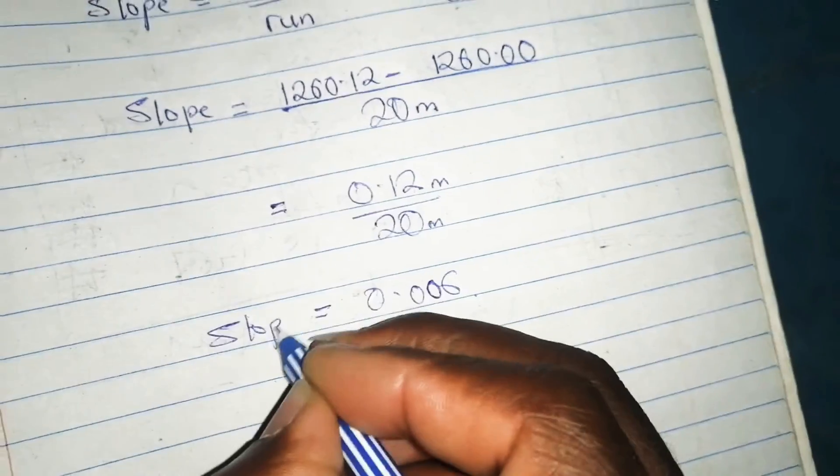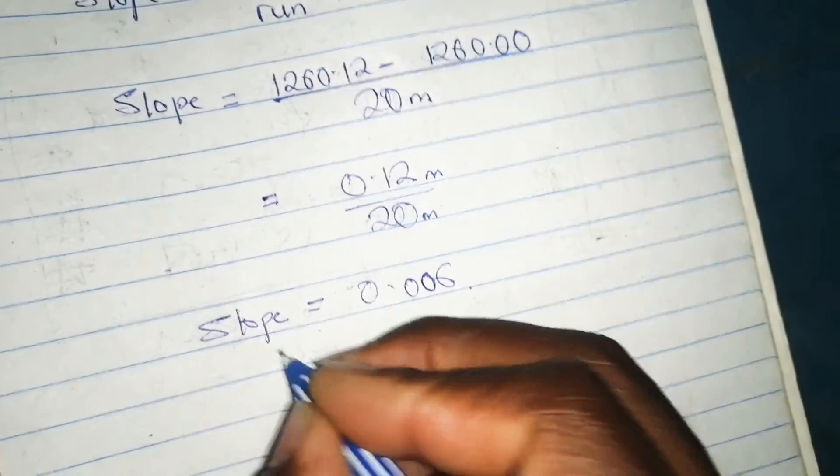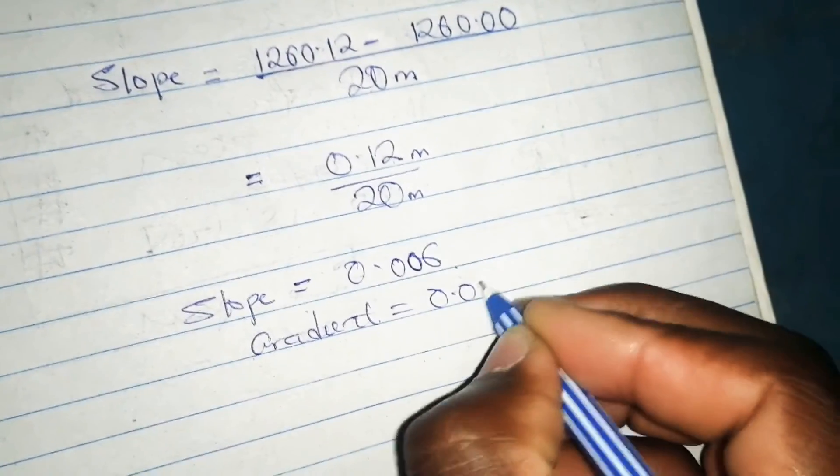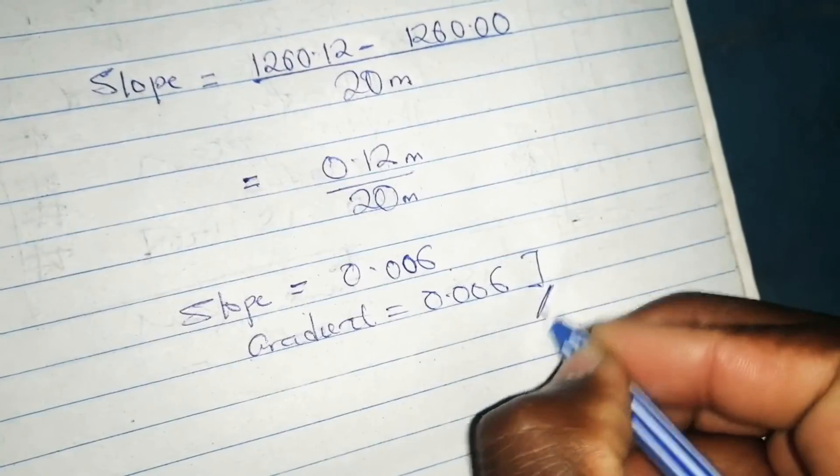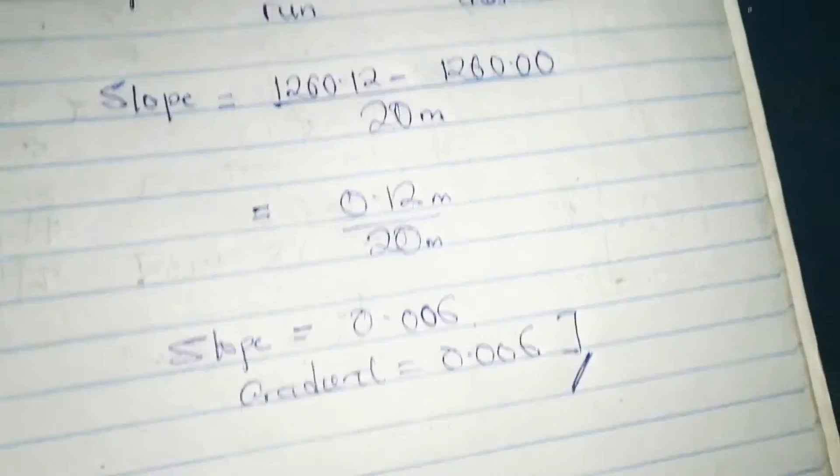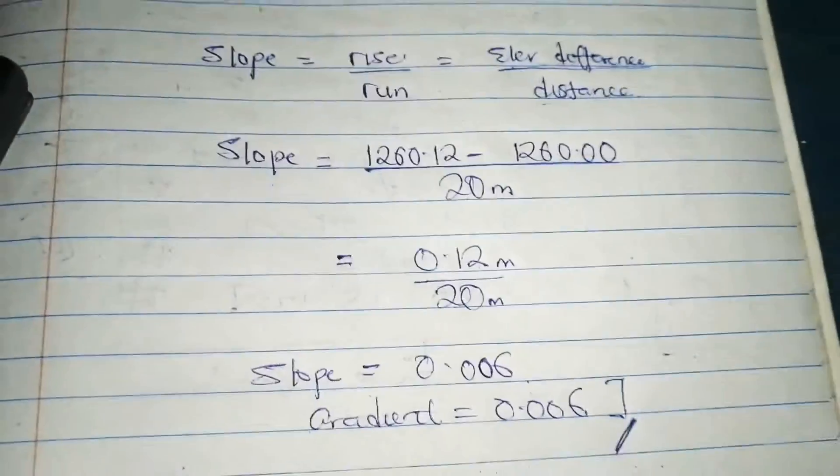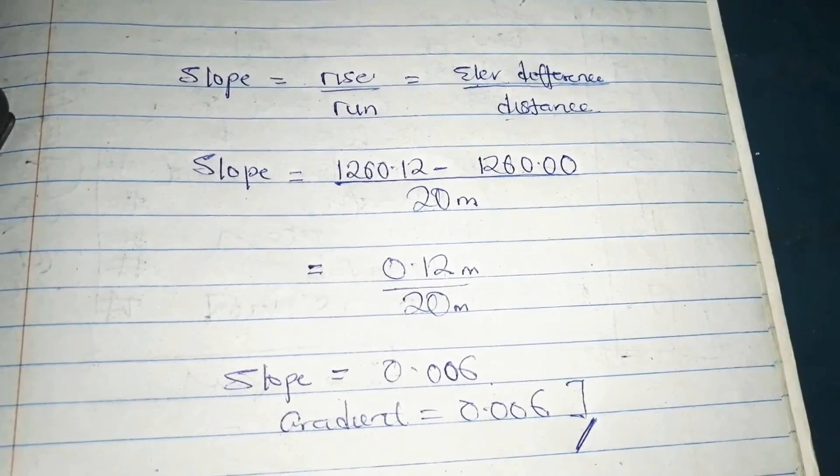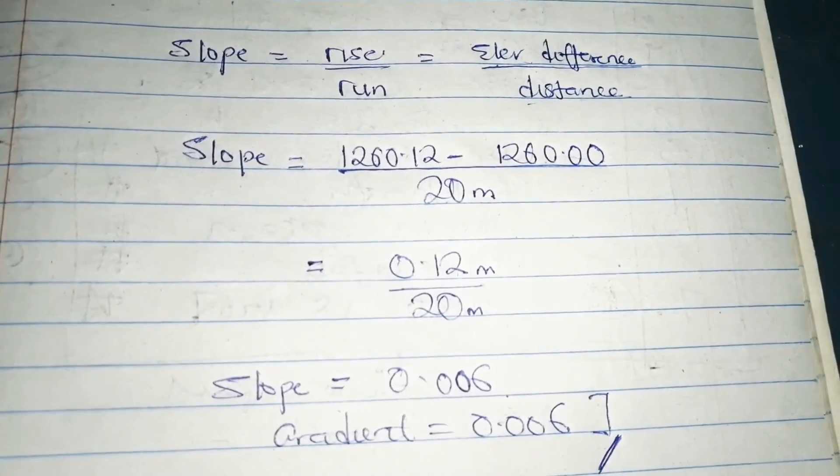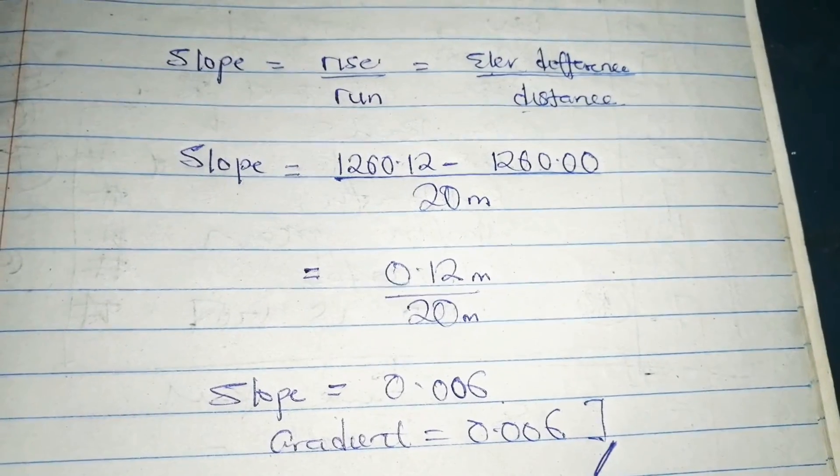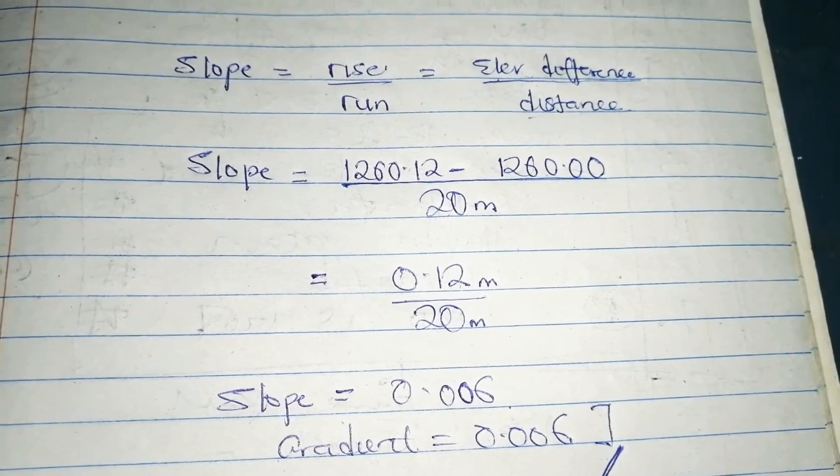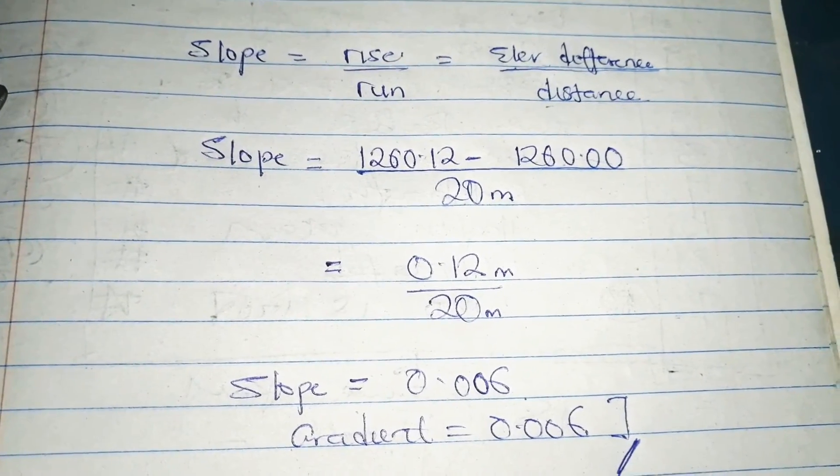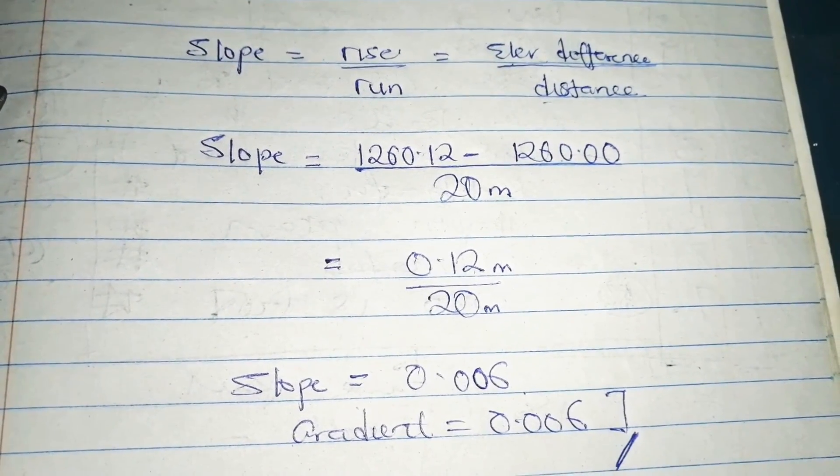So the slope, some call it the gradient, is equal to 0.006. This is the slope between those two points and this is what they are looking for. You have to take the elevation difference divided by the distance. This is how we calculate the slope between two points.